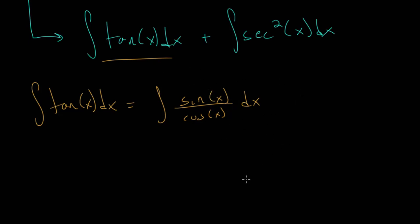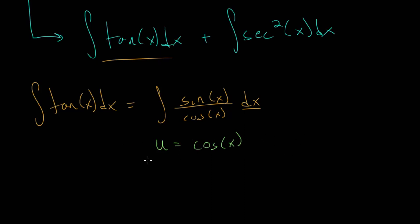With integrals, we can always look for a substitution. When taking a substitution, we will rewrite one of these functions with a different variable, and then we will need to rewrite dx in terms of that new variable by taking a derivative of that function and substituting it in. If we do see a function and its derivative, that is a clue that we can use u-substitution. If we set u equal to the cosine of x and take its derivative, we look at du in terms of dx — the derivative of the cosine function is just the opposite of the sine function, so du = -sin(x) dx.